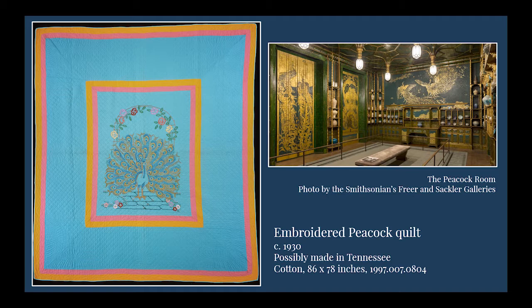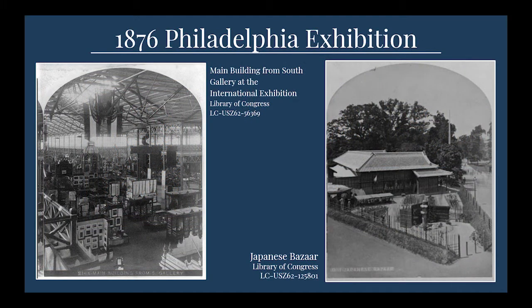The peacock, native to India and a symbol of power and beauty, was an especially popular image from the Aesthetic Movement. The Peacock Room at right is often cited as one of the most famous examples of the Aesthetic Movement in interior design. This quilt made in 1930 shows the enduring appeal and influence of that eastern imagery. The 1876 Philadelphia Exhibition, also called the Centennial Exhibition, was the first World's Fair held in the United States, with 37 countries contributing to its exhibitions.